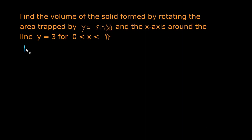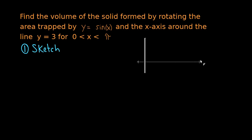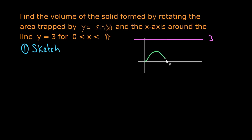I like to do these problems in steps because they're pretty much always the same. The first step is to just sketch things out to get an idea of what's going on. We know that x is between 0 and pi, so I'm just going to draw the positive part of the x-axis. Then we have the line y equals 3, and we also have sine x, which intersects the x-axis at pi.